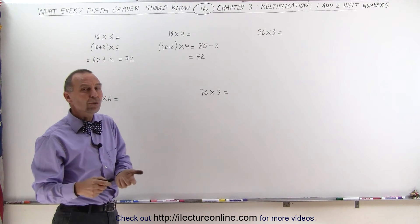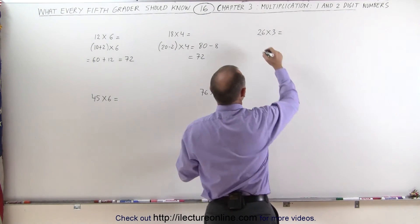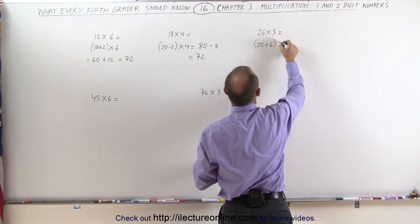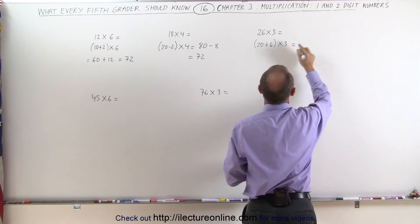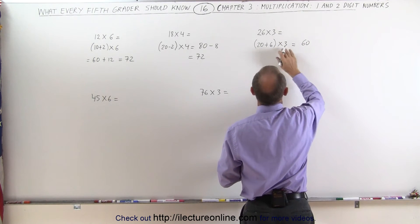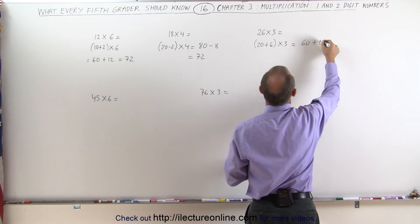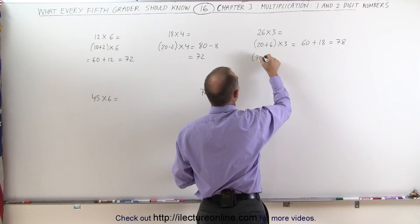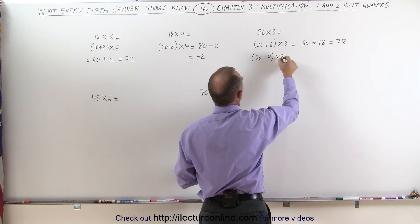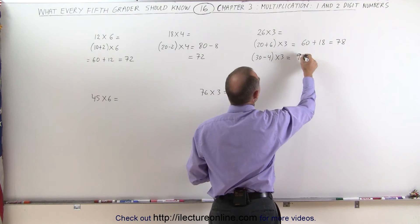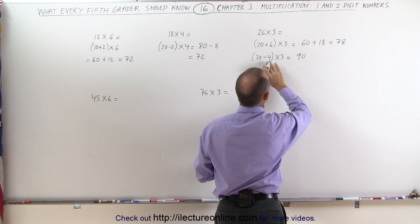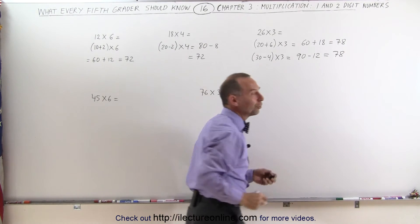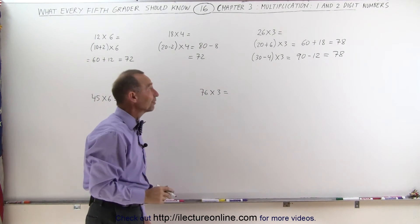26 times 3 — you could do it either way. You can think of it as 20 plus 6 times 3. So 20 times 3 is 60, and 6 times 3 is 18. 60 plus 18 is equal to 78. Or you can think of it as 30 minus 4 times 3: 30 times 3 is equal to 90, 4 times 3 is 12, subtract 12 from that — 90 minus 12 is 78. And of course, you would get the same answer if you did it right.